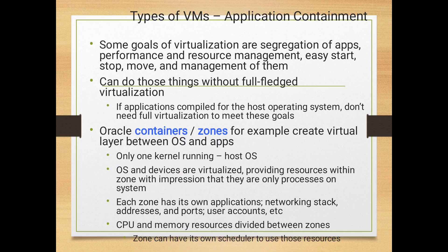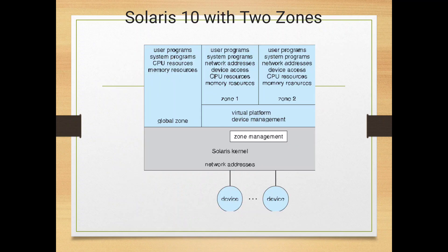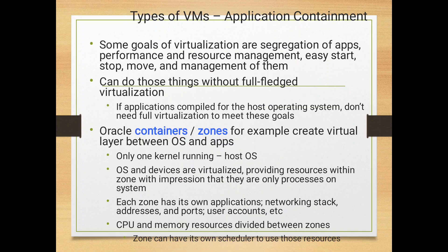The goals of virtualization include segregation of applications, performance, and resource management, making it easy to start and stop. An example is zones, which create a virtual layer between the OS and the applications. Only one kernel runs the host OS. An example of this is Solaris 10.